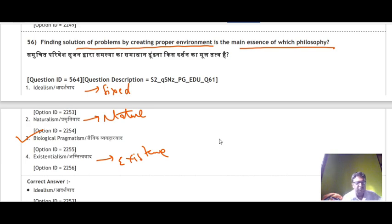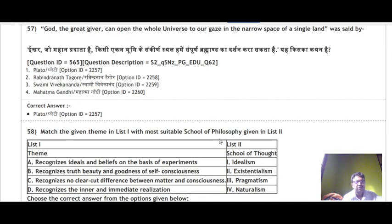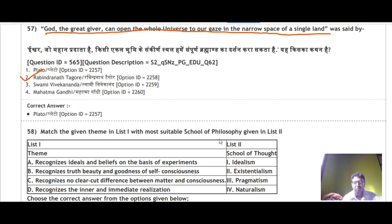Question 57: 'God, the great giver, can open the whole universe to our gaze in the narrow space of a single land' — this was written by Rabindranath Tagore. So the correct answer is option number 2.